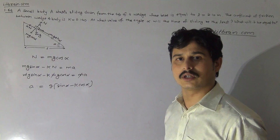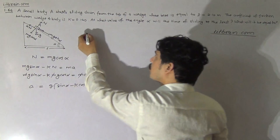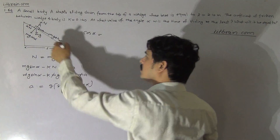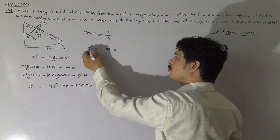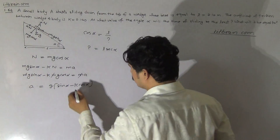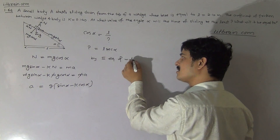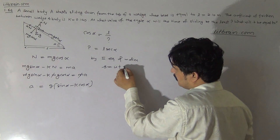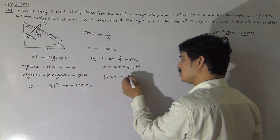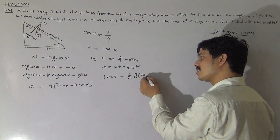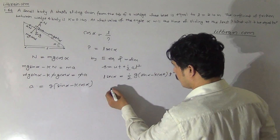The block starts from rest, so initial velocity is zero. The length of the wedge incline: since the base is L and the angle is alpha, using trigonometry, cos alpha equals base over hypotenuse, so the hypotenuse (length of incline) is L sec alpha. By the second equation of motion, S equals ut plus half a t squared. Substituting: L sec alpha equals half times G(sin alpha minus K cos alpha) times t squared.